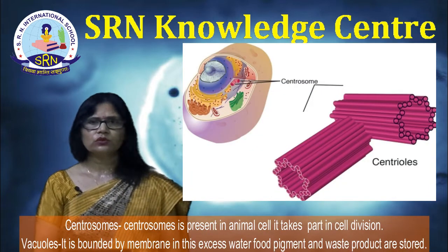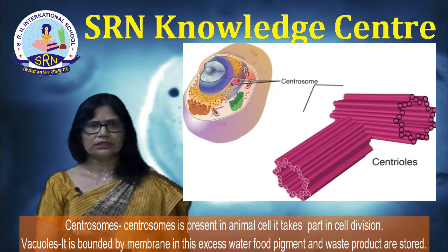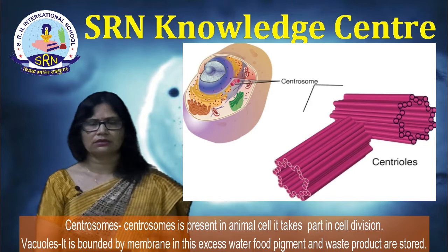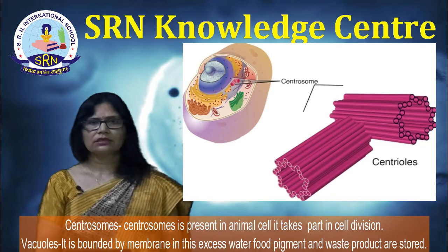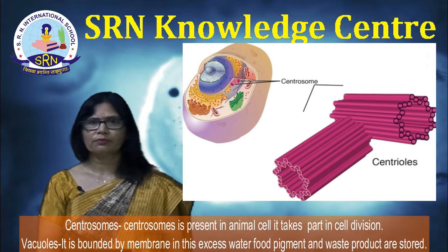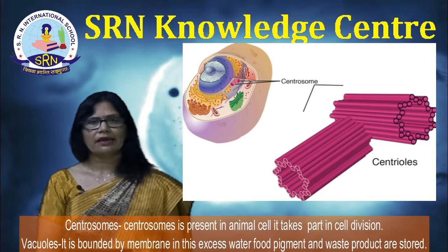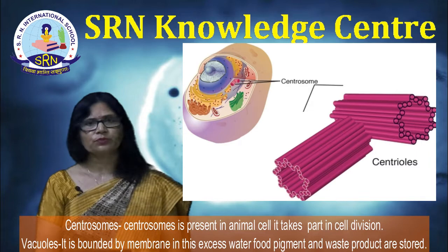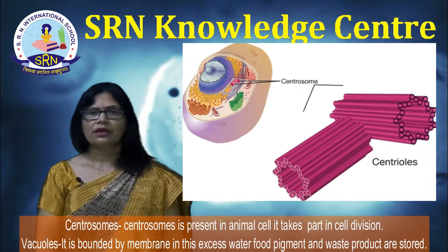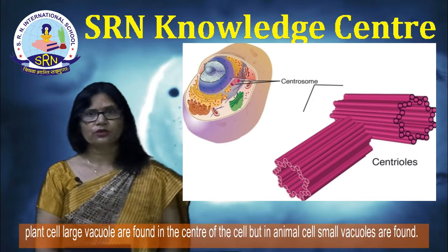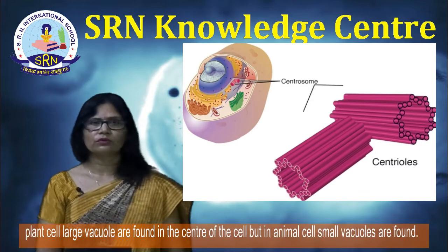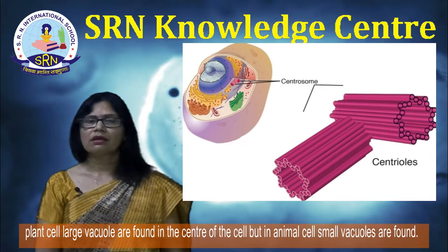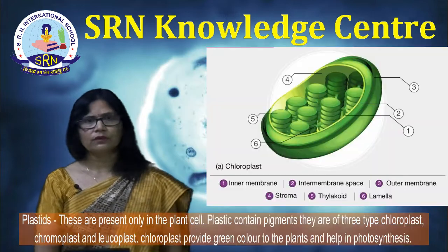That is why lysosomes are called the suicidal bag of the cell. Centrosomes are present in animal cells and take part in cell division. Vacuole is bounded by a membrane. In it, excess water, food pigments, and waste products are stored. In plant cells, large vacuoles are found in the center of the cell, but in animal cells, small vacuoles are found.